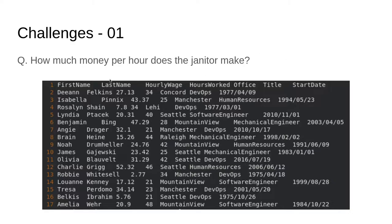So how much money per hour does the janitor make? The first line is the headings of our data: first name, last name, hourly wage, hours worked, office, title, start date — columns one through seven. So column seven is the title. Our very first entry, line two, is Deanne Falcons. Her hourly wage is $27.13 an hour. She worked 34 hours this week. Her home office is in Concord. Her title is DevOps, and her start date was April 9th of 1977.